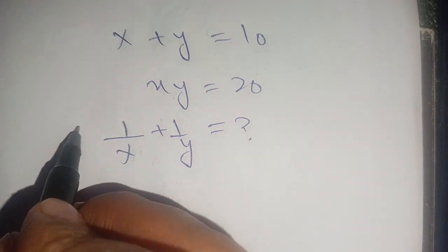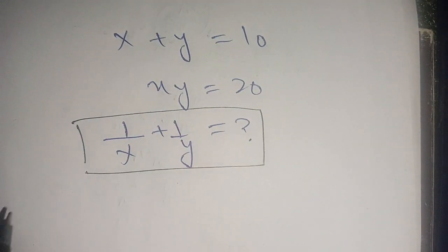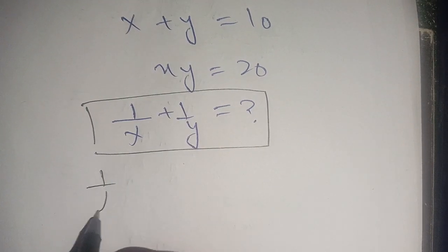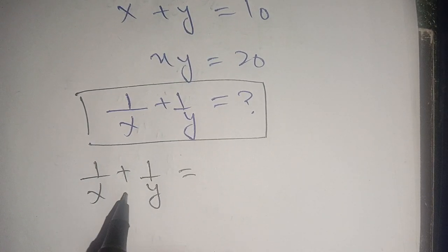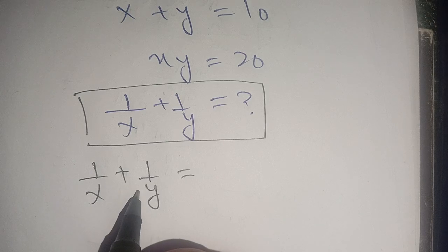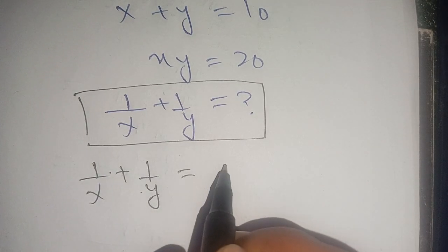Let us solve this. We can rewrite it as 1 divided by x plus 1 divided by y equals what we have to solve. We can cross multiply it as y times 1 becomes y, plus x times 1 becomes x, divided by x times y becomes xy.